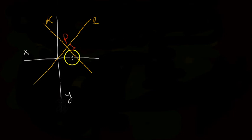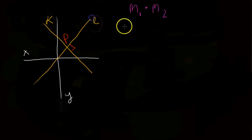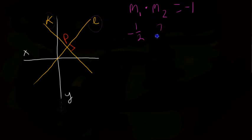In this video we're going to do a rather advanced proof on how to prove that two lines that are perpendicular on a Cartesian plane also have slopes that are negative reciprocals of each other. Slope is denoted as M generally, meaning that M1 multiplied by M2 is equal to negative 1. So if the slope of line K was negative 1/2, then the slope of line L would have to be 2, because negative 1/2 times 2 equals negative 1.